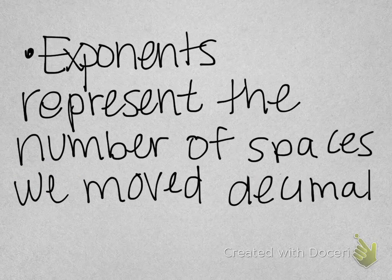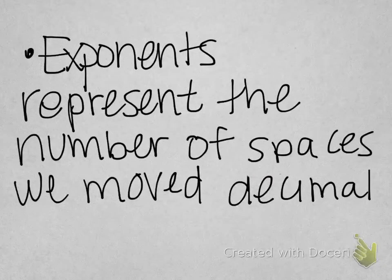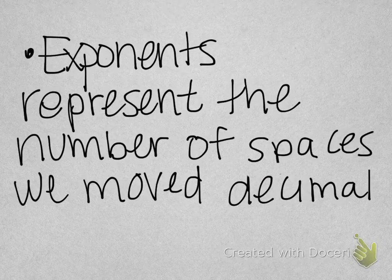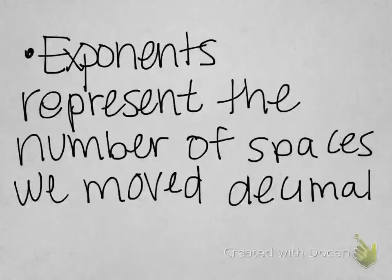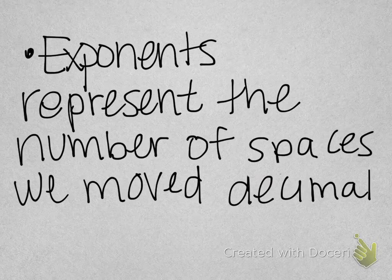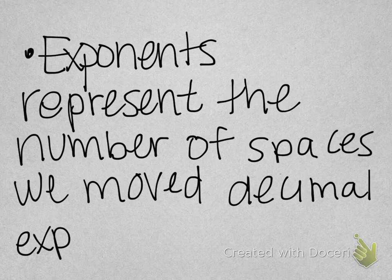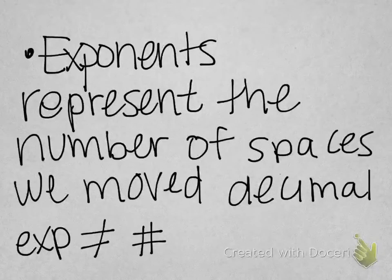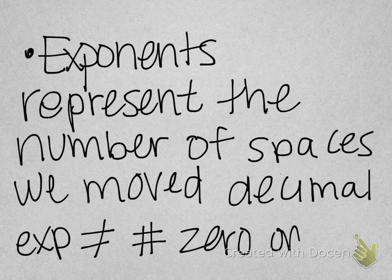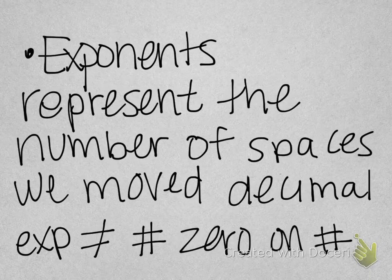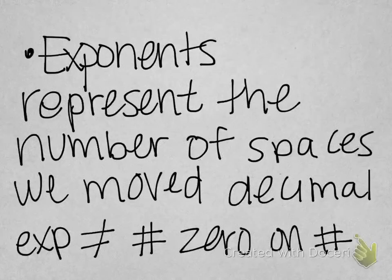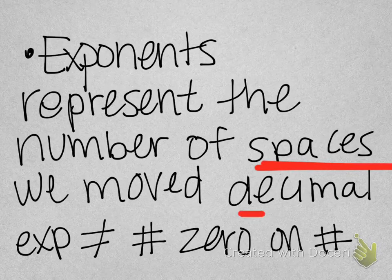The exponent represents the number of spaces your decimal place moves — either left or right, similar to metric conversions. Important: the exponent does not equal the number of zeros on the number. Don't get confused by counting zeros; that won't always match up. Exponents represent the number of spaces your decimal gets moved.